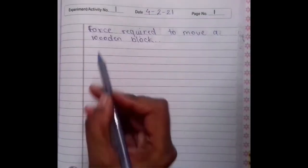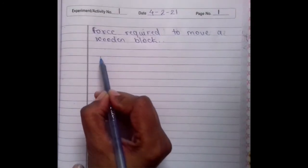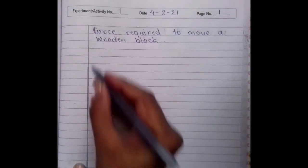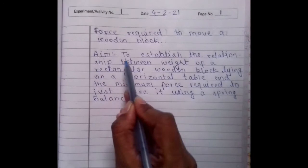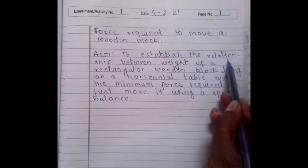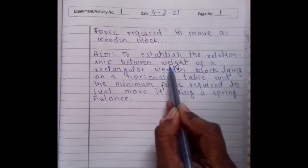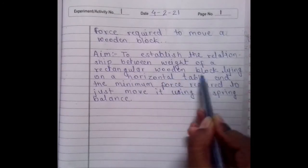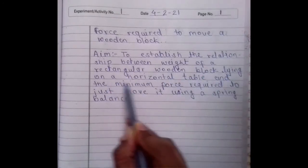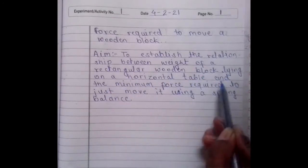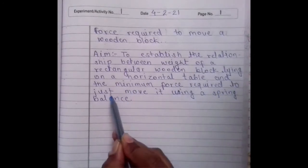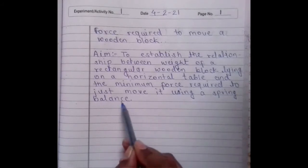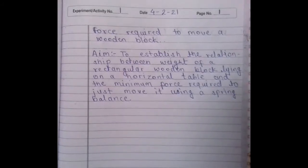Now, leave one line and below that, write down the aim of the practical. Aim: to establish the relationship between weight of a rectangular wooden block lying on a horizontal table and the minimum force required to just move it using a spring balance.